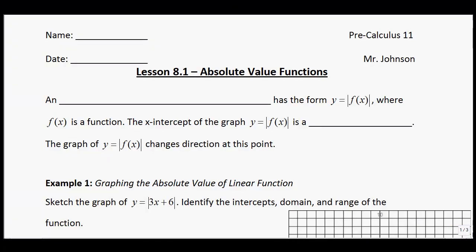This is our first lesson from the Absolute Value and Reciprocal Functions Unit, Unit 8. Lesson 8.1, Absolute Value Functions. We've already dealt with absolute values a little bit — we learned that when you take the absolute value of something, it basically makes it always positive. So now what we're going to look at is what happens to its function. Specifically, we're going to graph in this lesson.